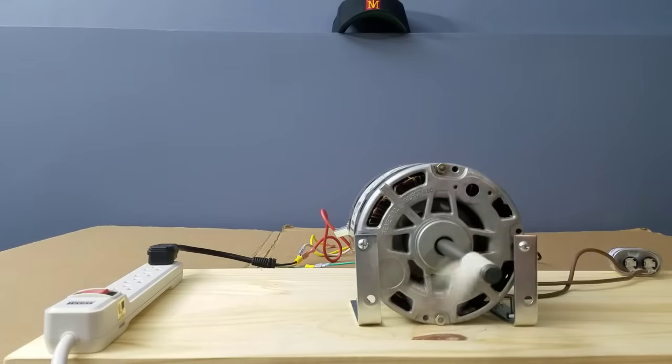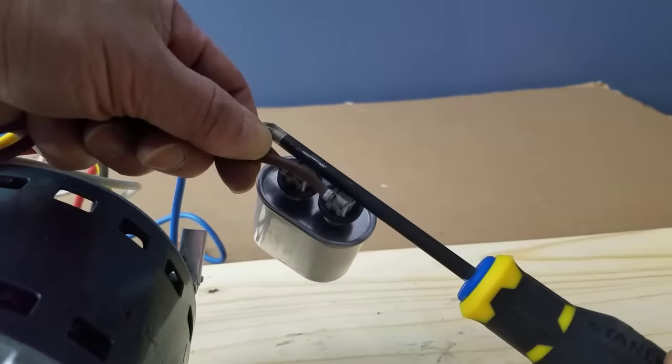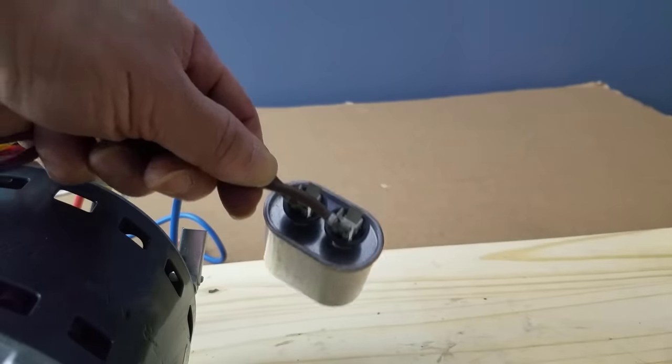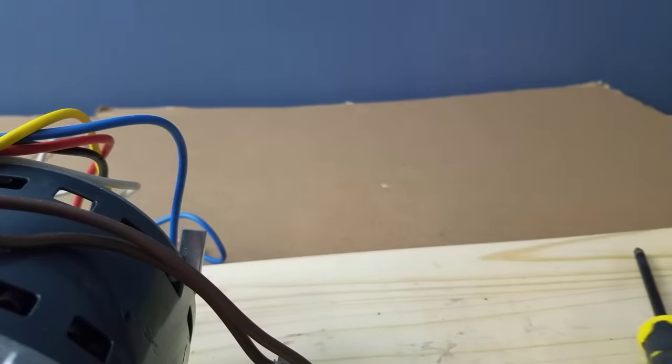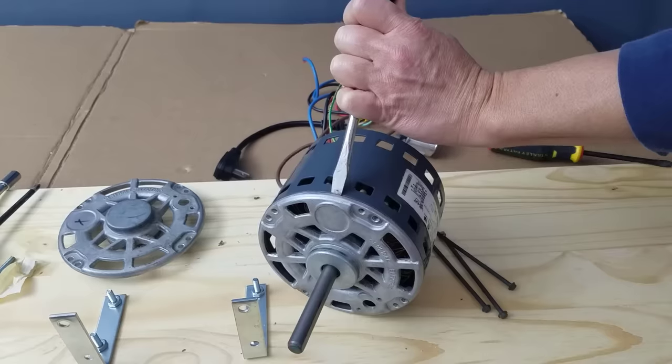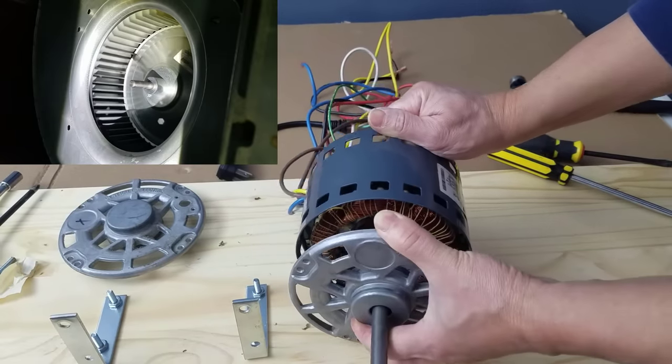First we need to reverse the counterclockwise spin to the opposite direction. Run the screwdriver across the capacitor terminals to discharge. This is one way to reverse a non-reversible furnace motor.